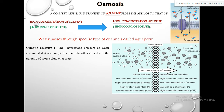Osmotic pressure is the hydraulic pressure of water that accumulates in one compartment. As water accumulates in a given compartment, it begins to generate osmotic pressure in that region, but this is when water is confined to that space.